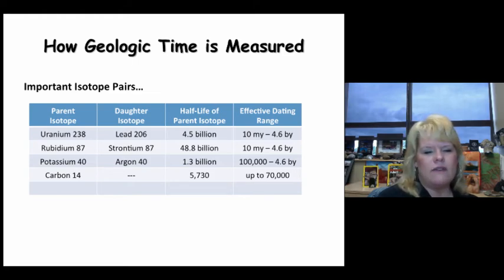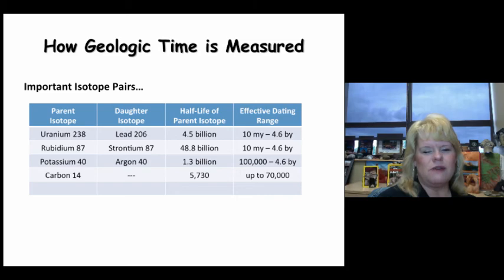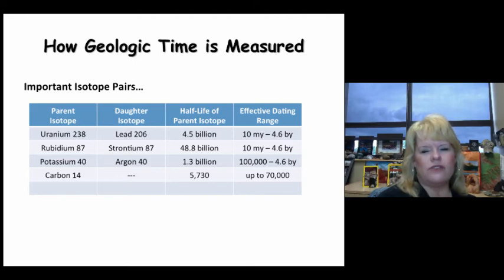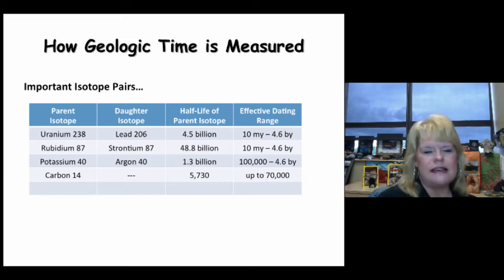Rubidium-87 to strontium-87 has a half-life of 48.8 billion years. We know this by looking at the ratio of decay and applying a mathematical equation. It produces the same effective range of dating as uranium-238.